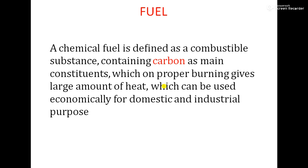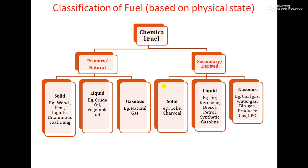The first classification is based on physical state. Some fuels are occurring naturally and some are derived fuels. Naturally occurring fuels are further classified into solid, liquid, and gaseous fuel. Naturally occurring solid fuels are wood, peat, lignite, bituminous, and cow dung.